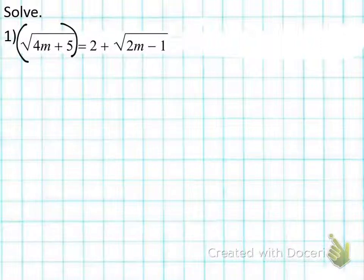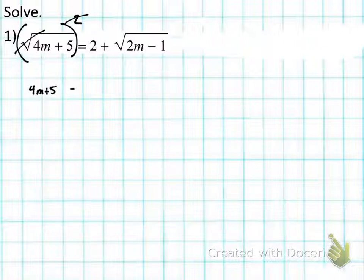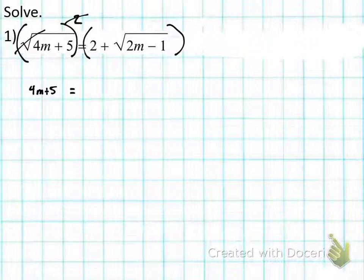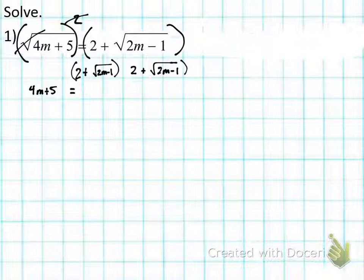When I square, remember — whenever I square the whole side, I have to put parentheses around the whole side and square it. The left side is pretty easy: the square root and square cancel out and all you're left with is 4m + 5. The right side, though, I have to square this whole right side, which is a binomial: 2 plus square root of (2m − 1). This is just like saying (2 + √(2m−1)) times itself.